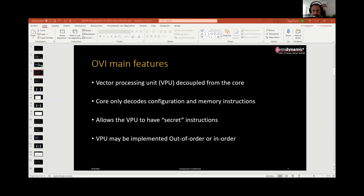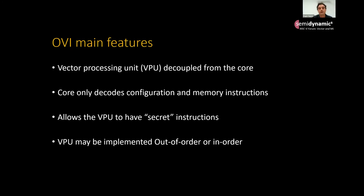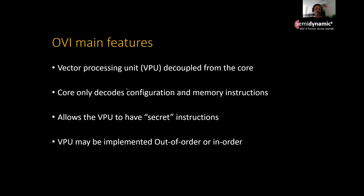So I will be describing the more technical aspects of the OVI. I want to make a special emphasis that the main feature of the OVI is that it's highly decoupled from the core. In fact, the core will only decode configuration and memory instructions. Configuration instructions are those that only affect the status registers, and memory are those that need to be executed on the core. This allows the VPU to have some secret instructions — instructions that the core knows nothing about. Also, the VPU, as Roger mentioned, might be implemented in-order or out-of-order depending on the implementer. The OVI does not set a restriction on this.